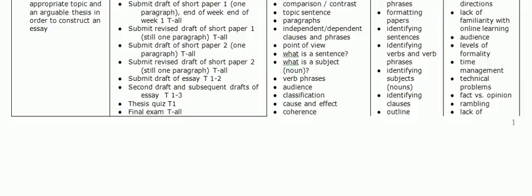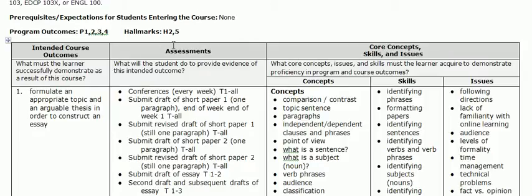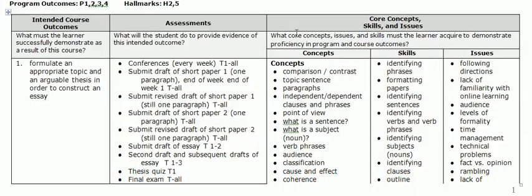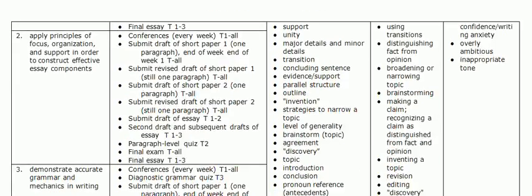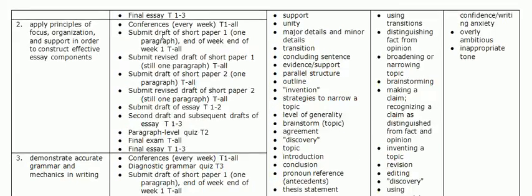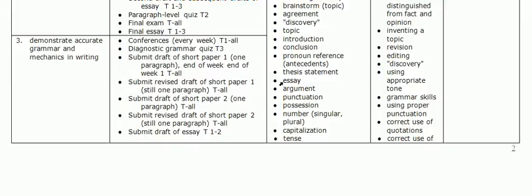In this same document, you'll see another column: assessments. These are the things students will do to determine whether they're fulfilling each outcome. Conferences, drafts of papers, a thesis quiz, and a final exam all assess how well students do in Outcome 1. For Outcome 2, a similar situation — the various drafts of the paper, conferences, etc. For Outcome 3, very similar, with a diagnostic grammar quiz and other types of tasks added.